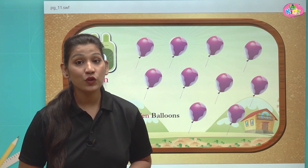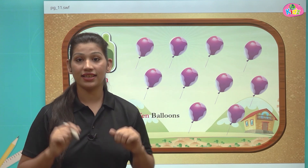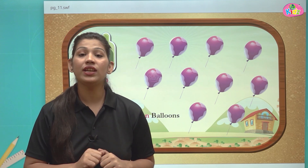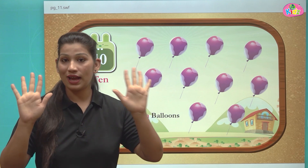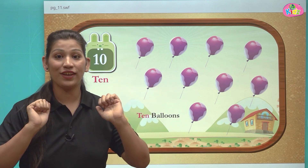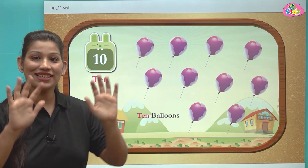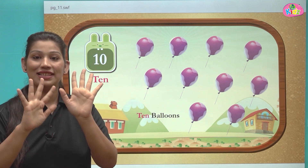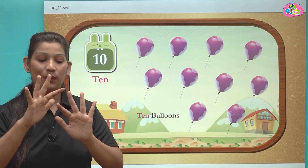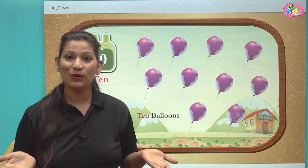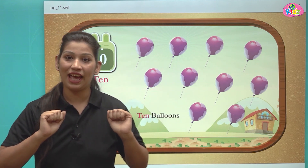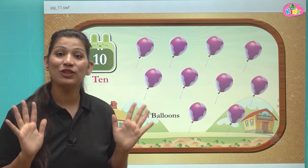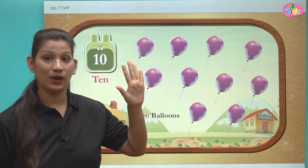There are so many things which are 10 in number. We have a total of 10 fingers in our hands. We have two hands, and when we club them together we have a total of 10 fingers. Let us count: one, two, three, four, five, six, seven, eight, nine, ten — total 10 fingers.